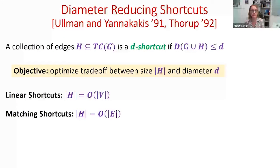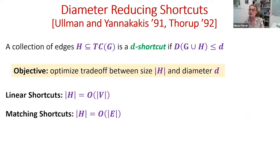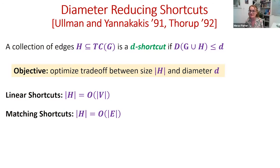Once we do that, we can compute the desired computation — say reachability — on this augmented graph. Because the edges are taken from the transitive closure, the answers are going to be exactly the same, but we enjoy the fact that the diameter is reduced. This motivated the notion of diameter-reducing shortcuts by Ullmann and Yannakakis and by Thorup, where formally a collection of shortcut edges H is a D-shortcut if the addition reduces the diameter of the augmented graph to at most D.